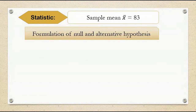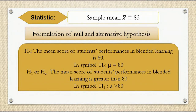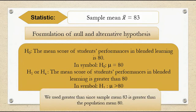Formation of null and alternative hypothesis. Ho: the mean score of students' performances in blended learning is 80. In symbol, Ho: mu is equal to 80. H1, or HA, the alternative hypothesis: the mean score of students' performances in blended learning is greater than 80. In symbol, H1: mu is greater than 80. We used greater than since the sample mean 83 is greater than the population mean 80.